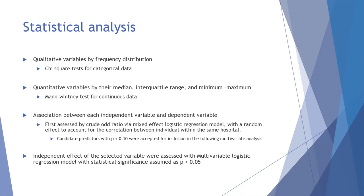For statistical analysis, qualitative variables were measured by frequency distribution while quantitative variables were recorded by median, interquartile range, and min-max. Association between independent and dependent variables was first assessed by crude odds ratio with a logistic regression model, with a random effects model added to account for correlation between individuals within the same hospital. Variables with p-value less than 0.10 were accepted for inclusion in multivariate analysis, with the multivariable logistic regression model using statistical significance of p less than 0.05.